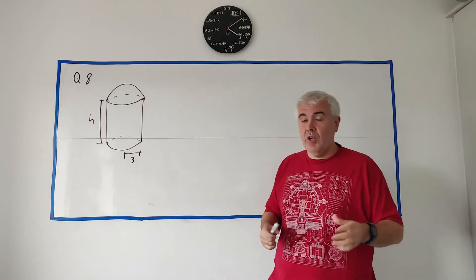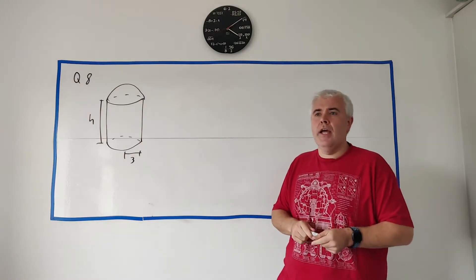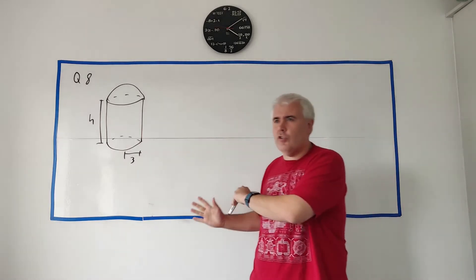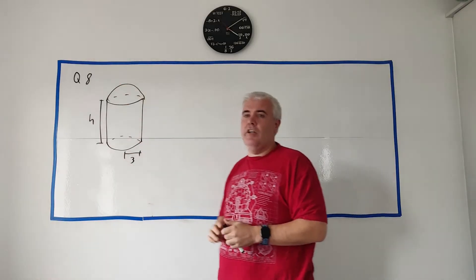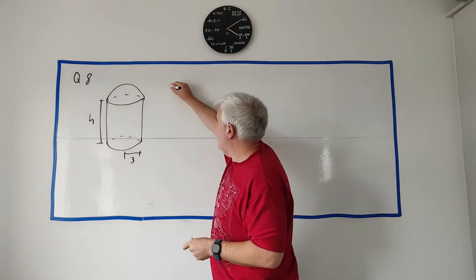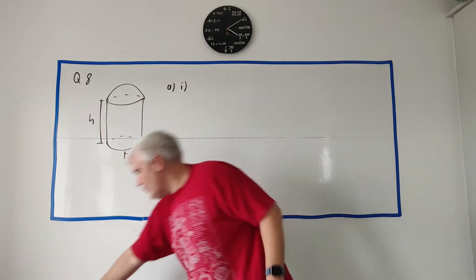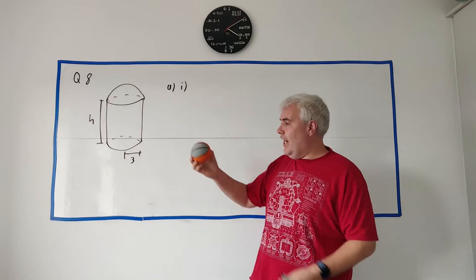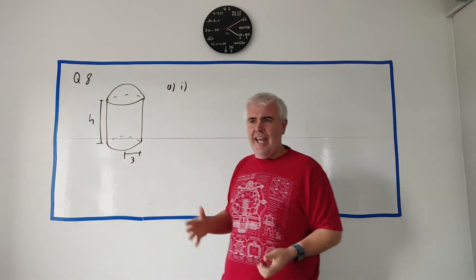This is question 8, one of the large questions, full of things like geometry, trigonometry, and areas and volumes. It starts off with a story about a lighthouse. We have a cylinder with a hemisphere on top. A hemisphere is half of a sphere — half of a ball — sitting on top, and the cylinder is like a can.